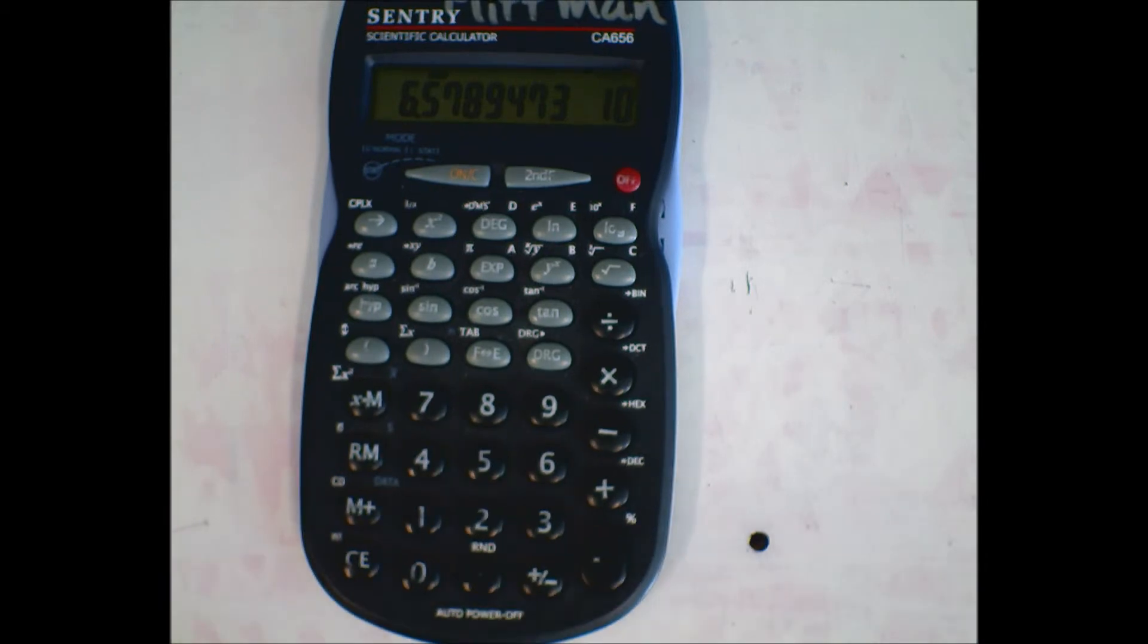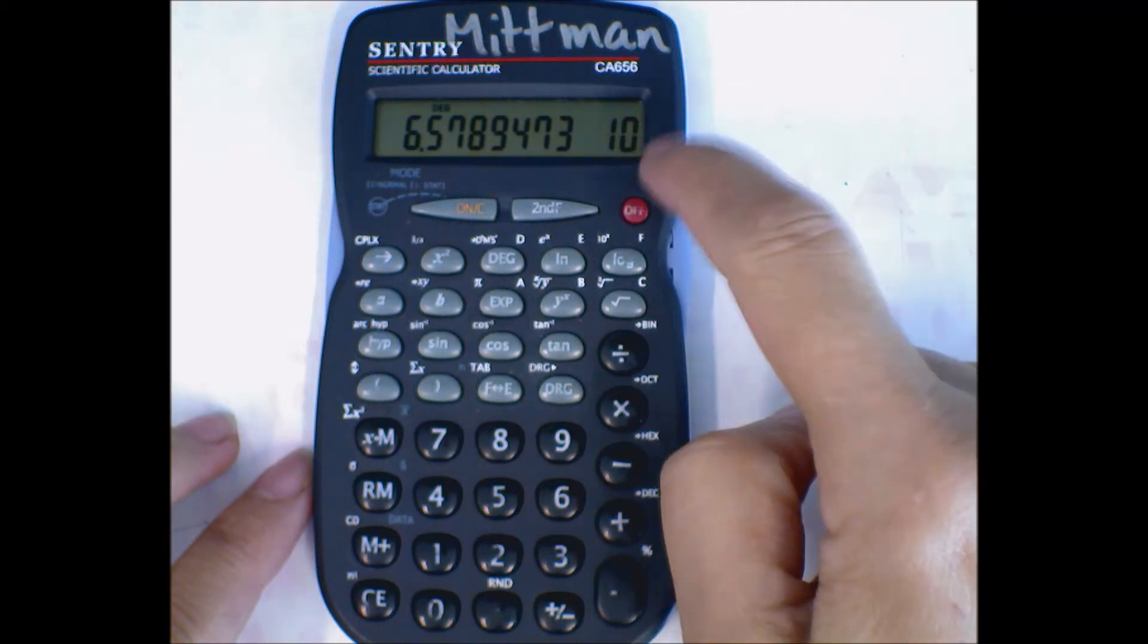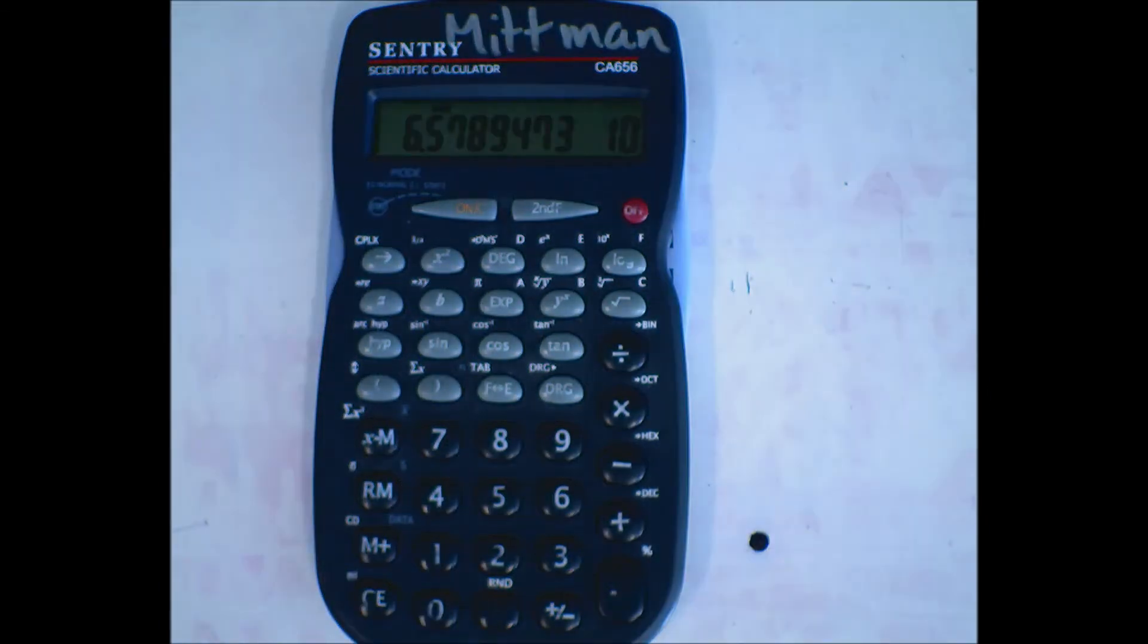There's my equal, and there's my answer. 6.58 times 10. There's a big gap there, so you have to understand that the 10 is the power when you're writing your answer.